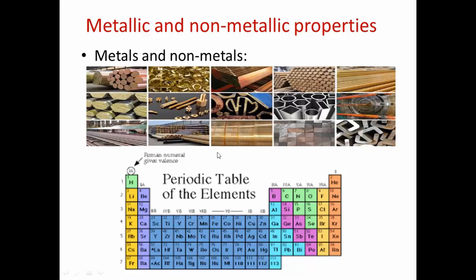Today we are going to continue with these properties. Metals have only one, two, or three electrons in the outermost energy level. During chemical reactions, they tend to lose these electrons to achieve a more stable configuration, similar to the previous noble gas in the modern periodic table. While non-metals have more than four electrons in the outermost energy level — they have five, six, or seven electrons — and they tend to complete their outermost energy level with eight electrons to be more stable, by gaining some electrons.